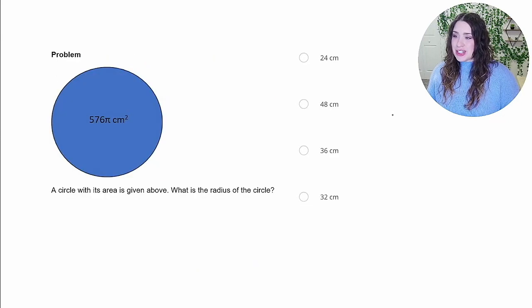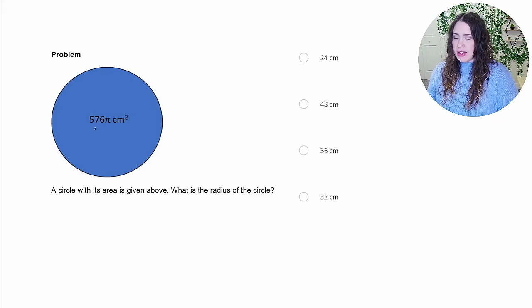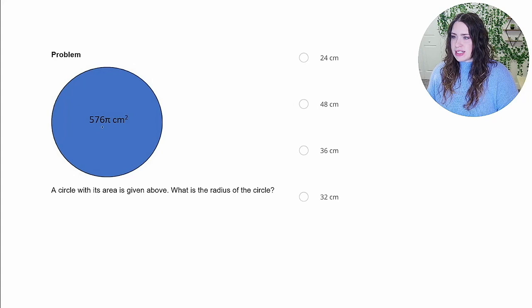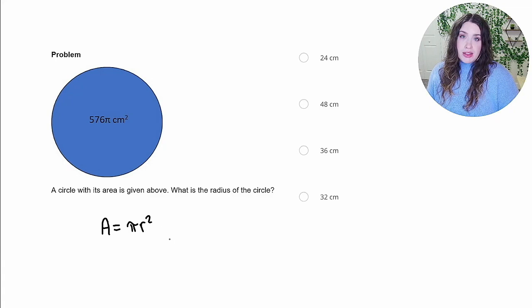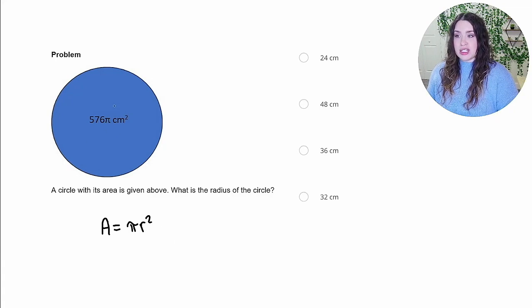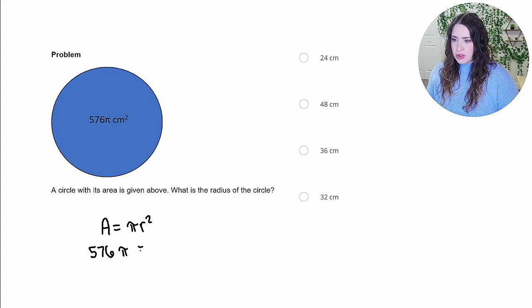All right, so this question asks, a circle with its area is given above, what is the radius of the circle? So we can see from the diagram here that the area is 576 pi centimeters squared. So we can go ahead and use the formula for the area of a circle, which is given by pi times the radius squared. And we can plug in the information that we do know, which is the area, so 576 pi is equal to pi times the radius squared.